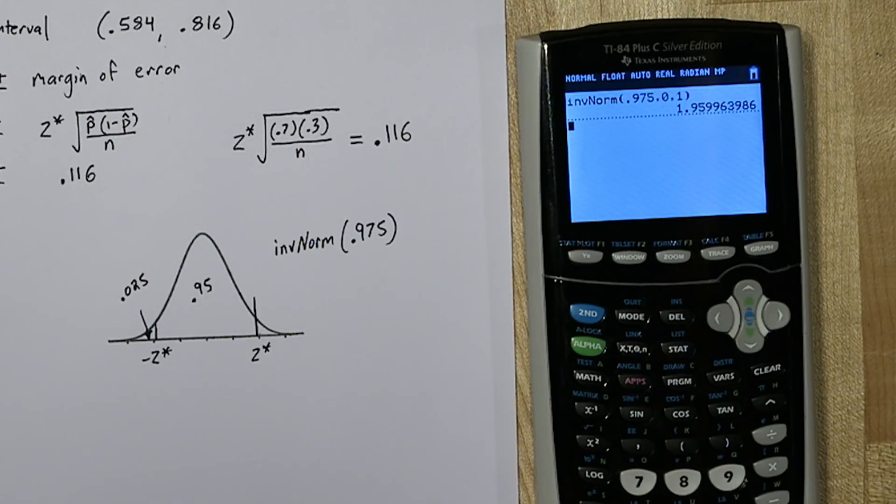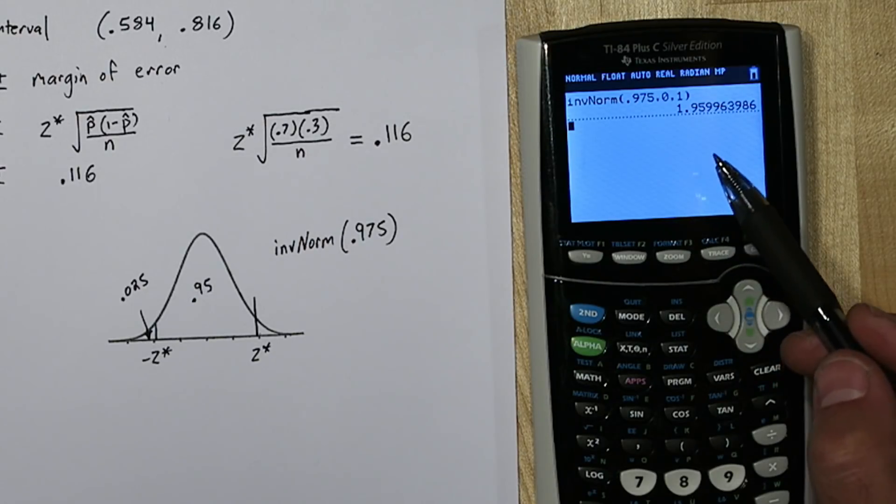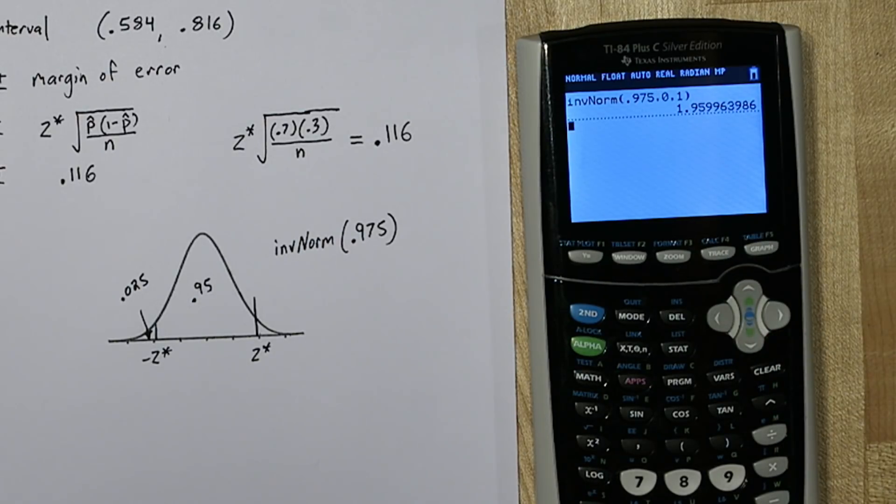You could probably round this to 1.96. In fact, you could probably even round this to 2 if you use the empirical rule. I bet when they come out with the solution guidelines for this AP free response question, they'll allow for any of those as long as you show your work. But I want to be as precise as possible, so I'm going to use this value.